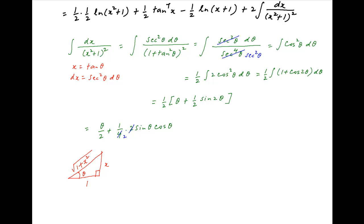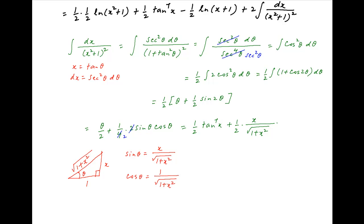Consider a right-angle triangle where the angle between the base and hypotenuse is theta, with tan theta equal to x. So the perpendicular is x and the base is 1, giving hypotenuse equal to square root of (1 plus x squared) by Pythagoras. Therefore sin theta equals x over sqrt(1 plus x squared) and cos theta equals 1 over sqrt(1 plus x squared). The integral of dx over (x squared plus 1) squared simplifies to one-half tan inverse x plus x over [2(1 plus x squared)].